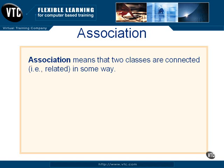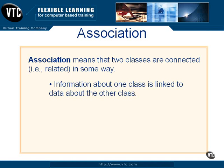Another kind of relationship is association, which simply means that two classes are connected — that is, related — in some way. For example, when you plug your speakers into your CD player, you've created an association between your speakers and the CD player. One kind of association indicates linkage, where information about one class is linked to data about the other class. An example is information about a payroll object associated with data about an employee object.